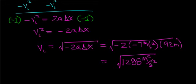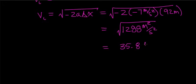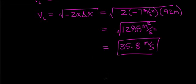When you take the square root of 1288 meter squared per second squared, you get units of meters per second. The result is 35.8 meters per second — and that is the initial velocity before this car locks up its brakes.